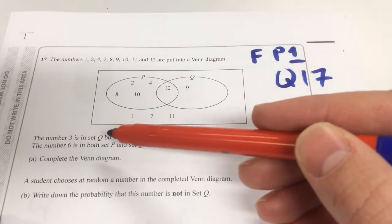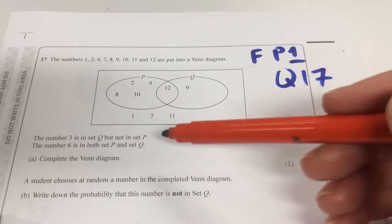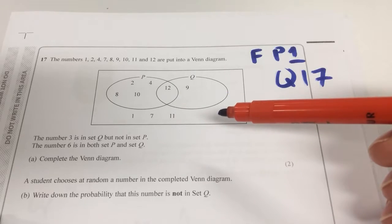They then tell us that 3 is in set Q but not in P. 6 is in both P and Q. We have to complete it.